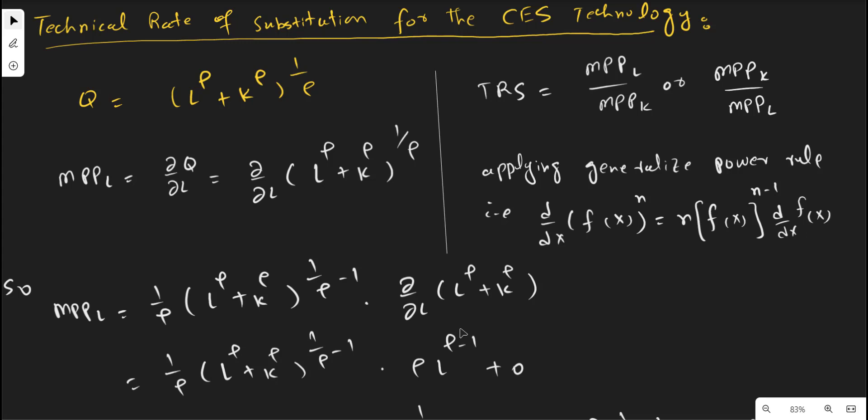If we take the first order partial derivative of this function with respect to labor, we have to apply the generalized power rule, because there is a power over the whole function. The generalized power rule states that if a function has a whole power and you want to take its derivative, the power will be multiplied with the coefficient of the whole function, and the power will be reduced by one.